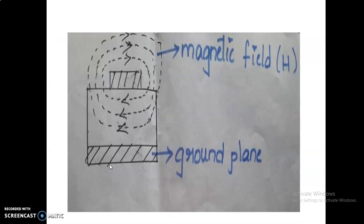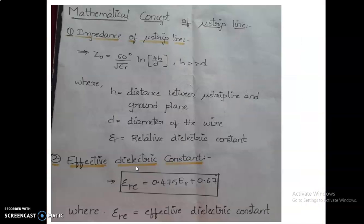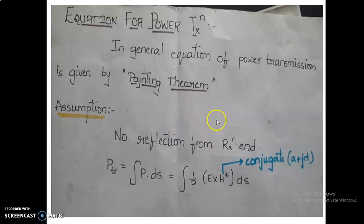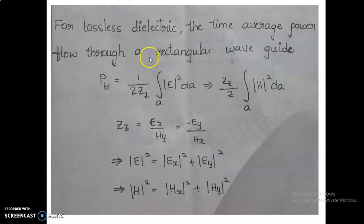The last topic is the equation of power, where we understand the power generated in TE and TEM modes. Power in the transmission line or electromagnetic waves is defined through the Poynting theorem. The assumption is that there is no reflection from the receiver end — a purely ideal condition. Power transmission is given by the integration of the Poynting vector P dot dS over a surface. It can also be written as voltage times current, where voltage and current are replaced by electric and magnetic fields respectively.